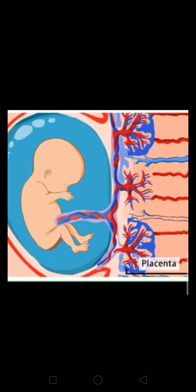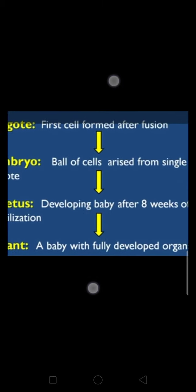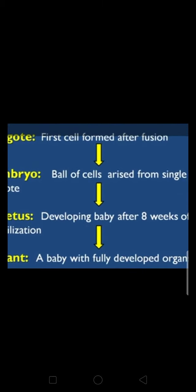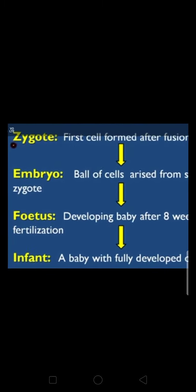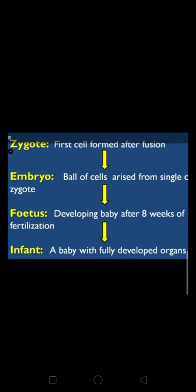The fetus, when born, is called an infant. So to summarize: zygote is the first cell formed after fusion; embryo is the ball of cells arising from the single cell zygote; fetus is the developed baby after three weeks of fertilization; and infant is the baby with fully developed organs.